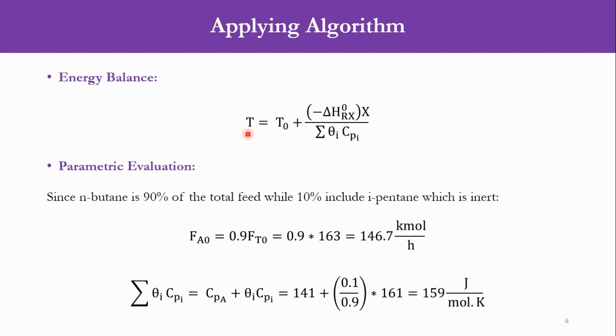Now how these parameters we can evaluate, we will go to the parametric evaluation and calculate the value of the flow rate. We have been given that n-butane is 90 percent of the total feed while the 10 percent includes isopentane which is considered as inert. So if we have to calculate FA0, it will be 0.9 times the total flow rate. The total flow rate is given to us as 163 kmol per hour, so if we multiply it by 0.9, it will be 146.7 kmol per hour, while the remaining quantity will be isopentane.